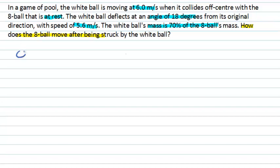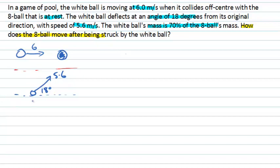The white ball is moving at 6 metres per second and collides off-centre with the 8-ball. After the collision, taking the original direction of the white ball, the white ball is now moving at 18 degrees to that direction at 5.6 metres per second. The question asks about what's happening with the 8-ball after the collision. From experience, we might guess on our diagram that the other ball will move off in some direction, and when we do the calculation, the numbers should tell us how good that guess was.